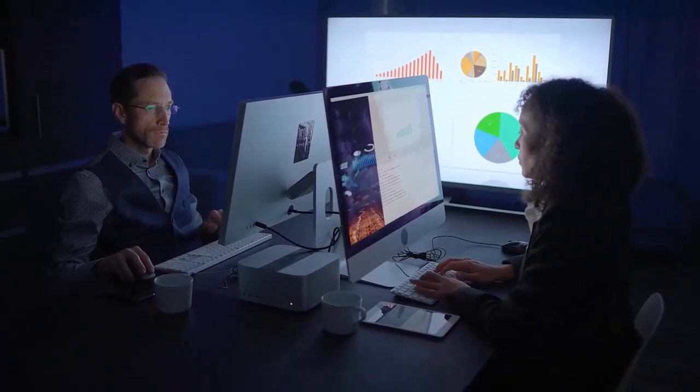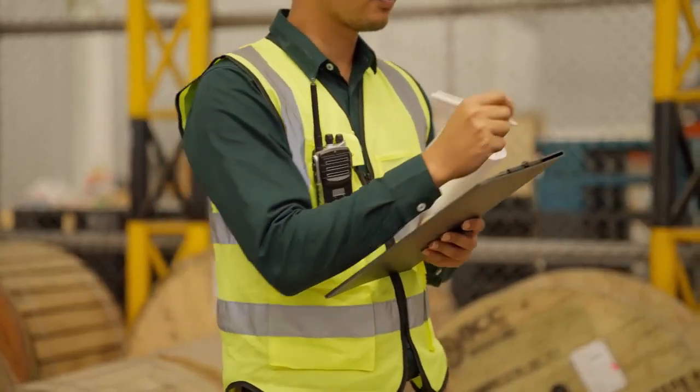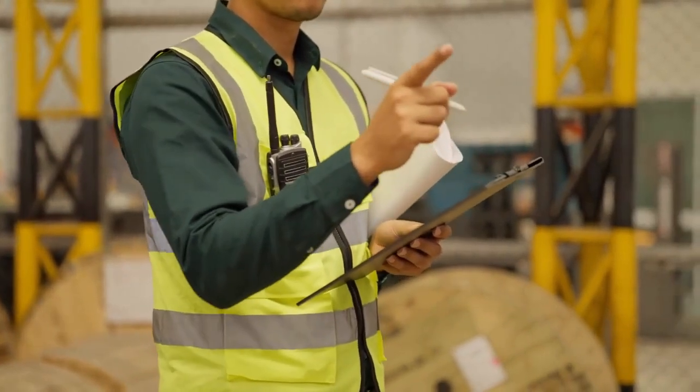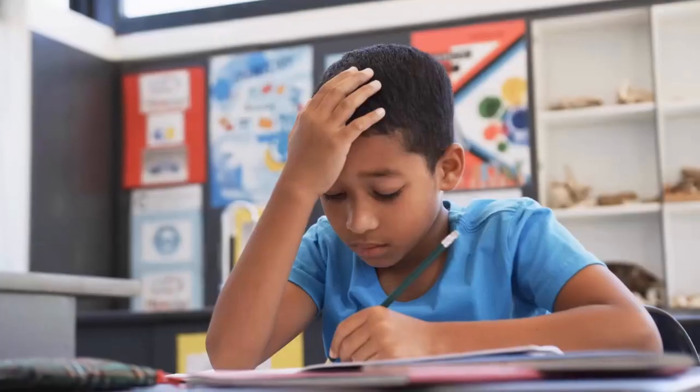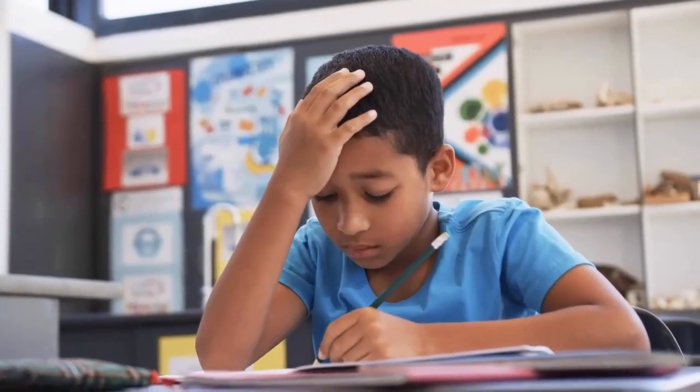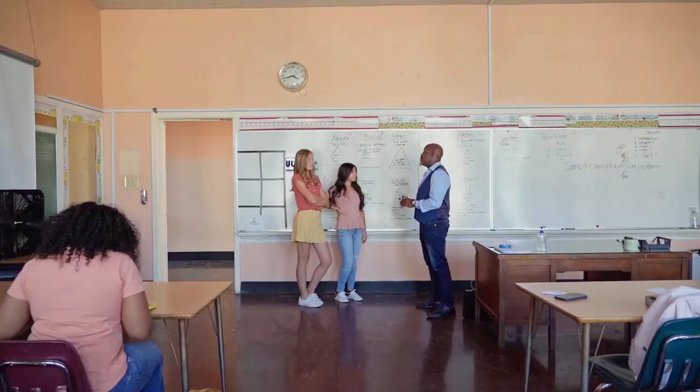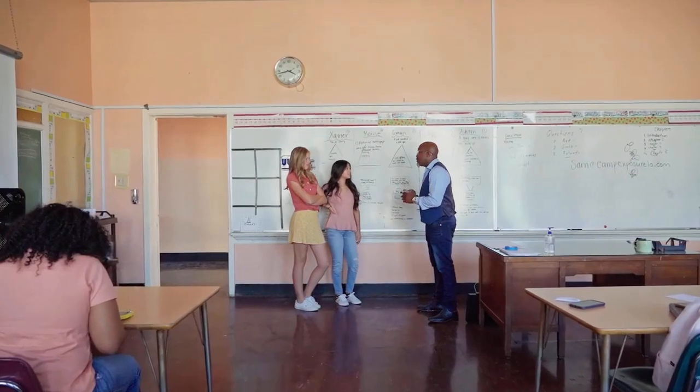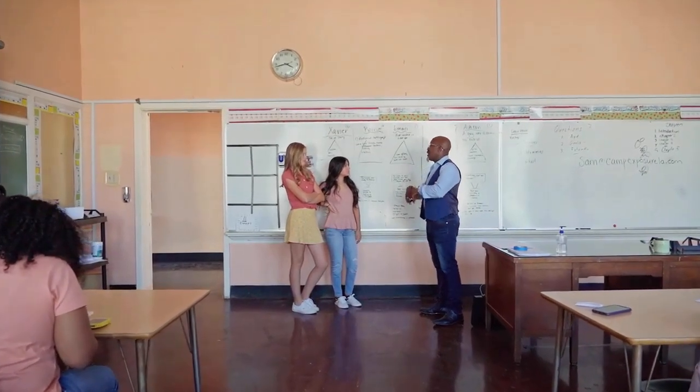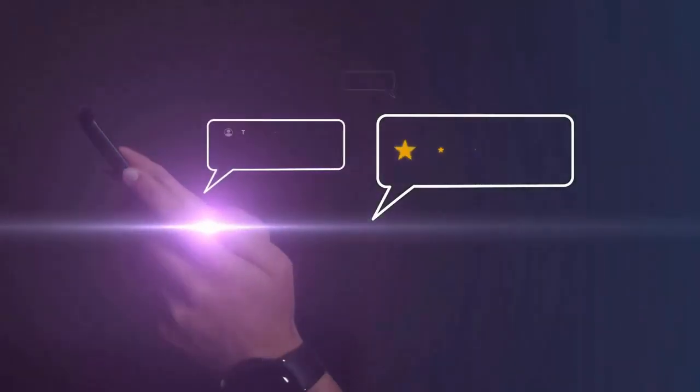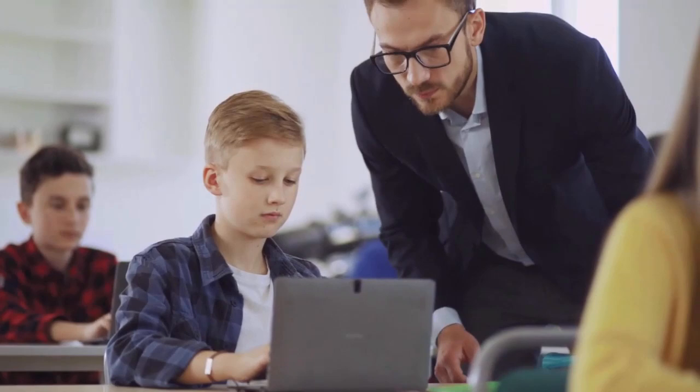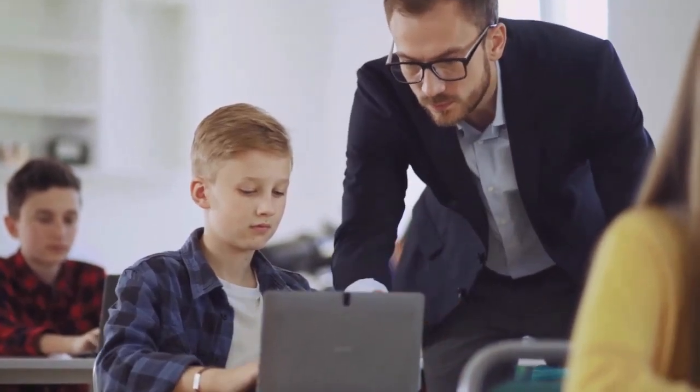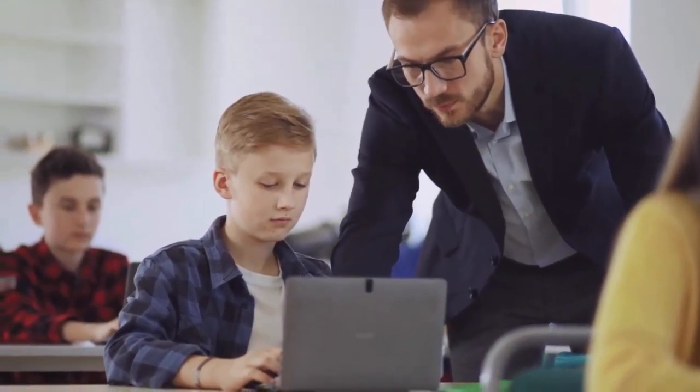But the teacher doesn't work alone. Enter the supervisor or the meta-verifier. This model checks whether the teacher's grading makes sense. It's an extra layer of verification to prevent mistakes. Sometimes the teacher might hallucinate errors or misjudge a step. The supervisor ensures the feedback is accurate. Together, the teacher and supervisor create a robust system, allowing for more accurate grading and feedback.